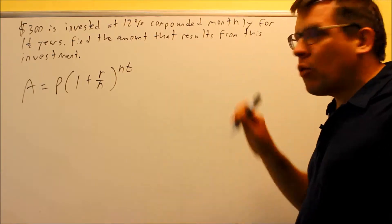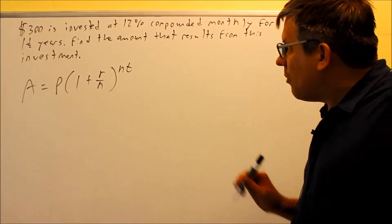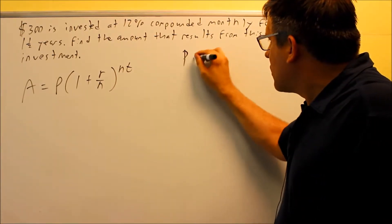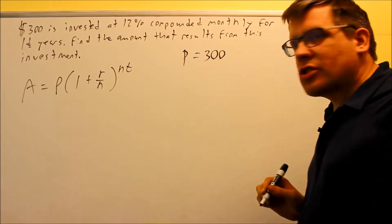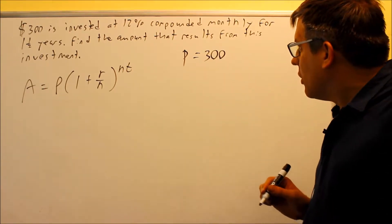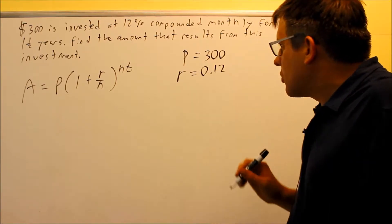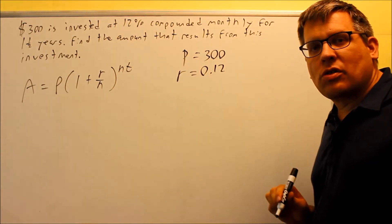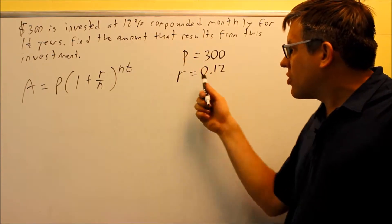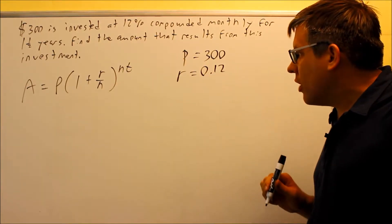So let's go through and indicate what our variables are for this particular problem. The $300 is being invested, so that means that my principal, my P, is going to be $300. My R, you need to change this into a decimal. So we move the decimal place two places to the left. That changes it from percent into a decimal, so it's 0.12.